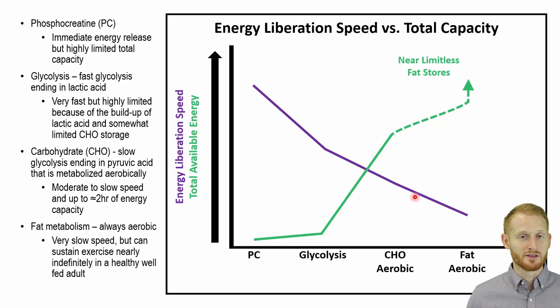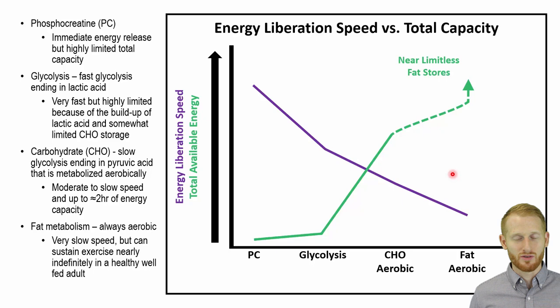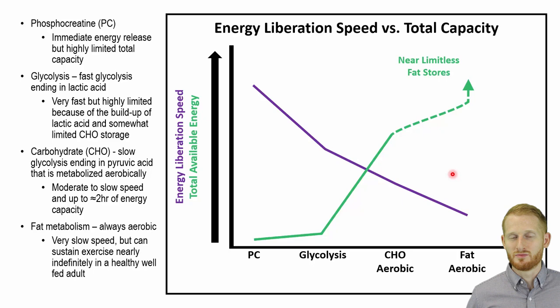When burning fat aerobically, the total amount of energy that can be produced is so much more than any other source — including aerobic carbohydrate metabolism — that it couldn't even be drawn on the figure. We have a nearly unlimited amount of energy capacity through fat metabolism, assuming a normal healthy individual. If they are using aerobic fat metabolism, they're probably not going to stop because they run out of fat — they'll stop for some other reason.